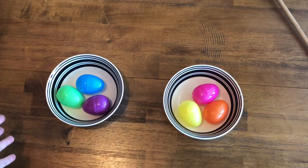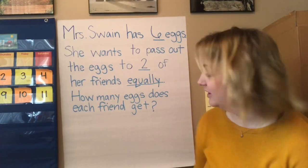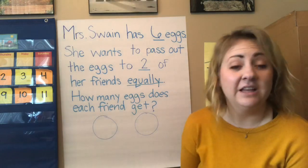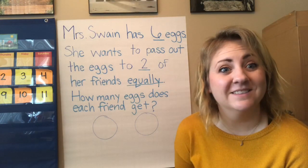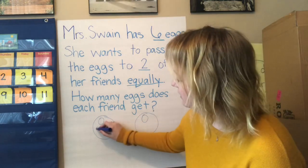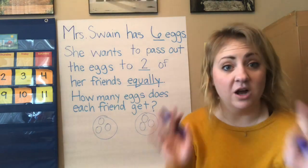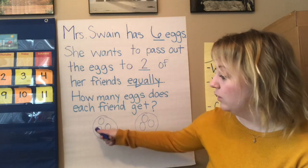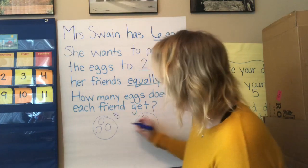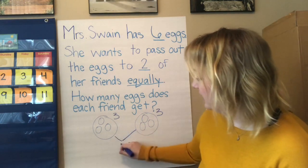Is it fair? Is it equal? Are they the same? Yes. Mrs. Swain shared her six eggs with her two friends, and each person had three eggs. Let's go ahead and do it again. One, two, three, four, five, six. I made sure to draw all six eggs and each person got one, two, three. So this person got three eggs, this person got three eggs, and all together they had six.